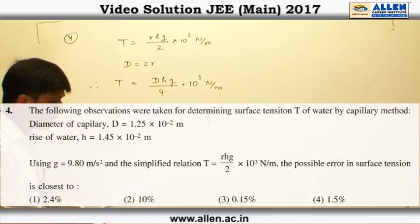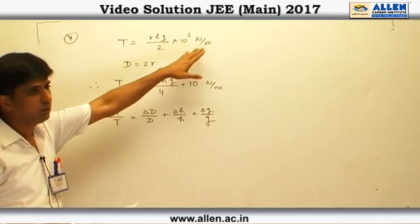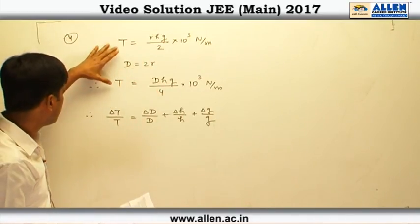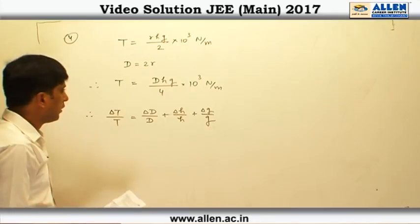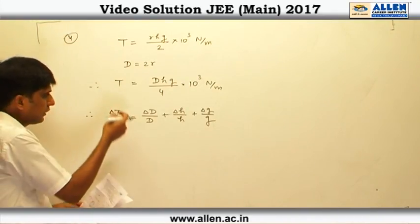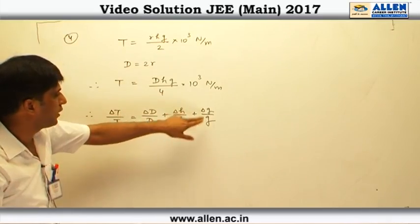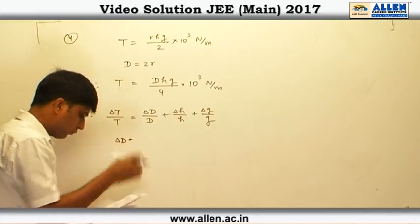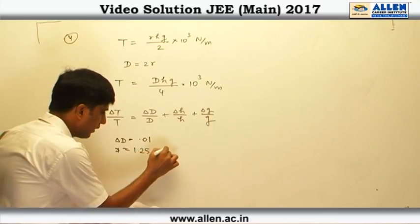In question number 4, we are asked to find the percentage error in the value of surface tension. The expression is given as T equals R·H·G divided by 2 into 10 to the power 3 Newton per meter. Since diameter equals twice the radius, we can write surface tension as T equals D·H·G divided by 4 into 10 to the power 3 Newton per meter.